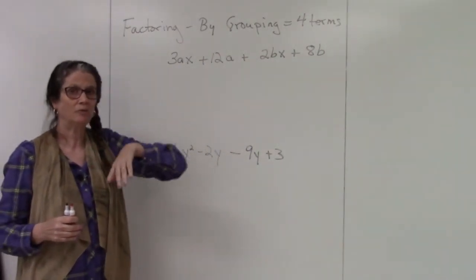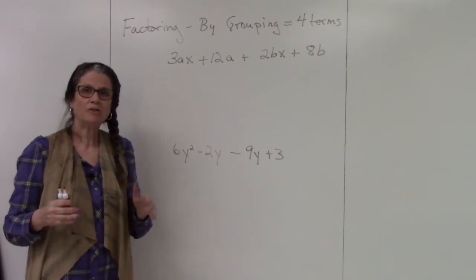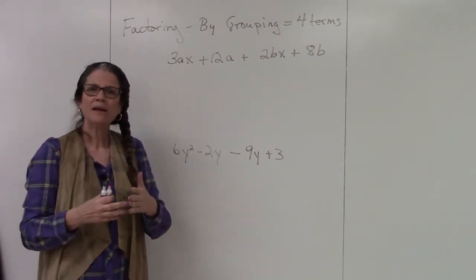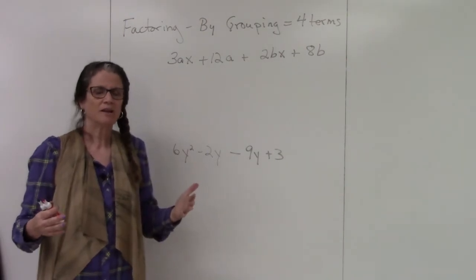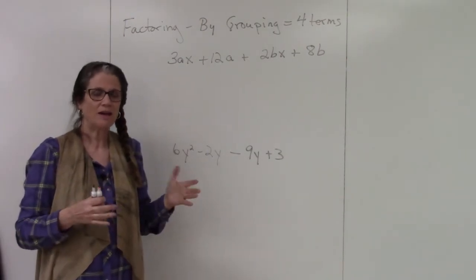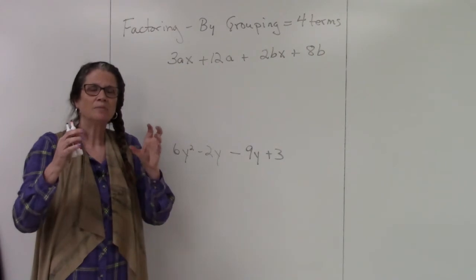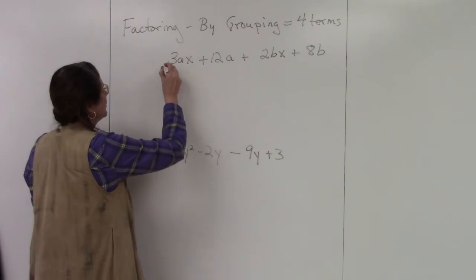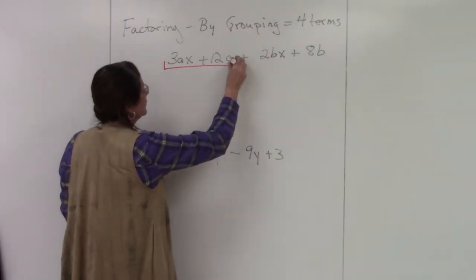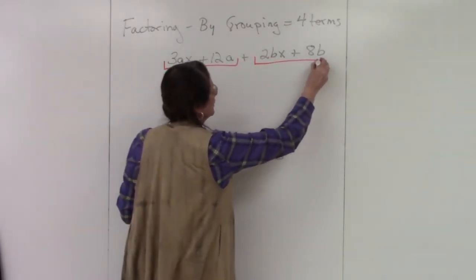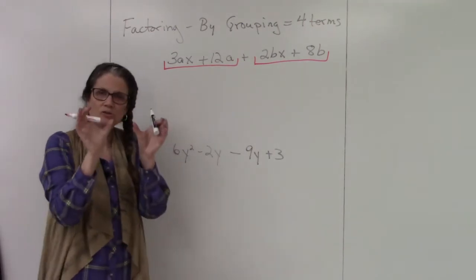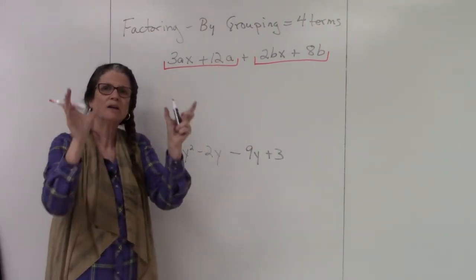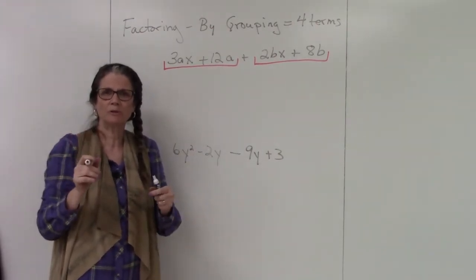That's how you know it's factoring by grouping. The great thing about it is once you identify you have four terms, it's just greatest common factor—it's just what we just learned. You're looking at two terms and you're going to group them and see what's in common. I'm going to group the first two and the second two. So you're breaking up a big long four-term polynomial into two two-term polynomials.